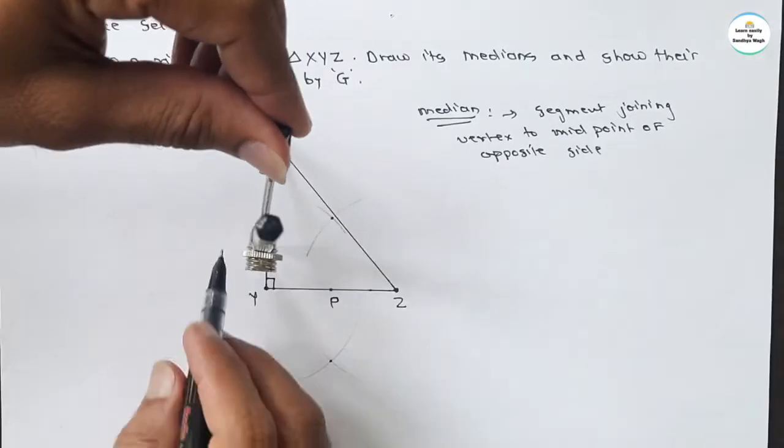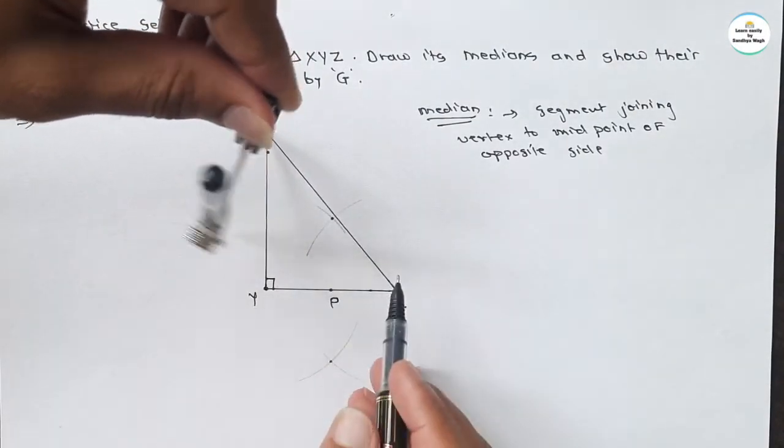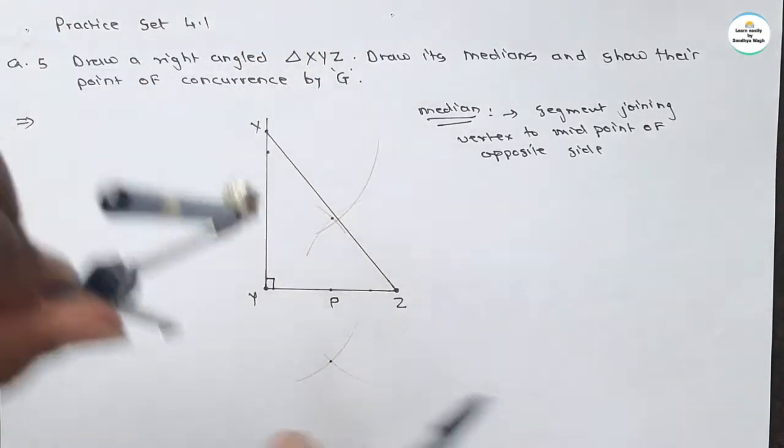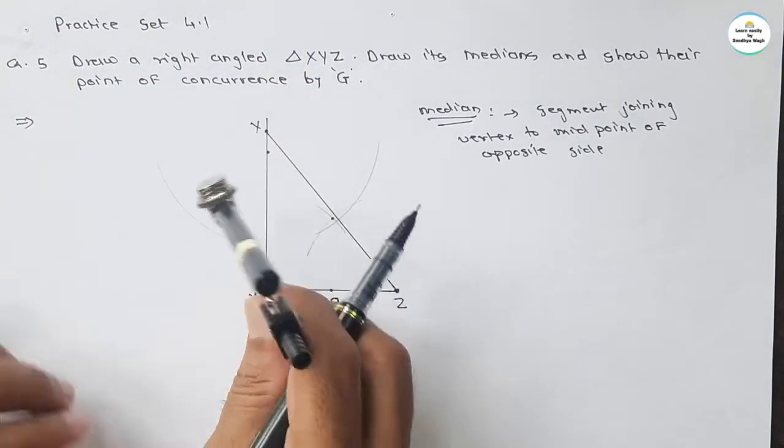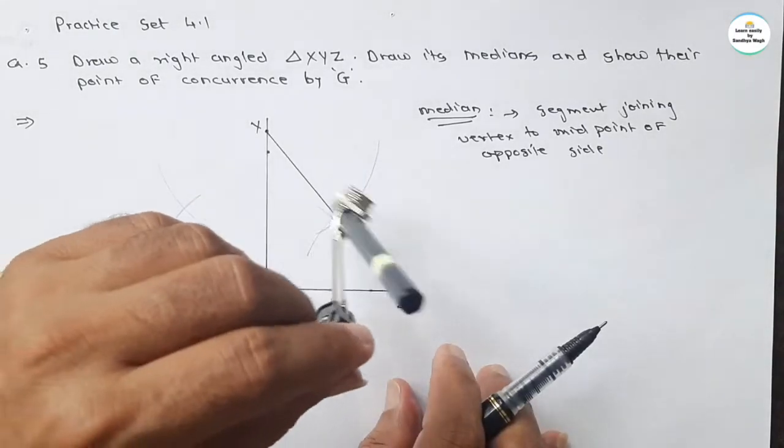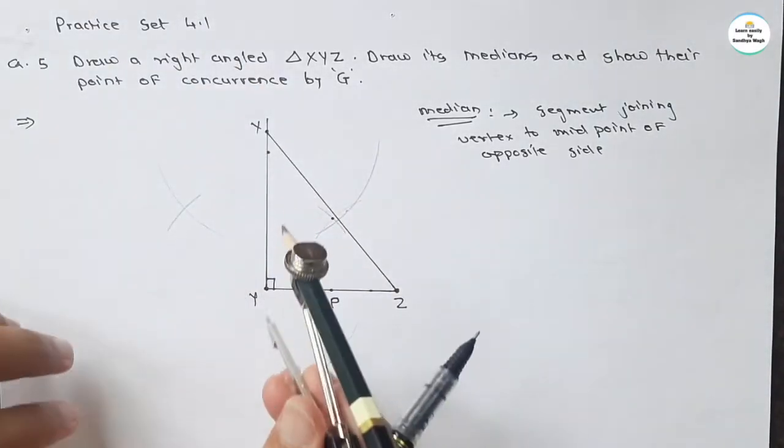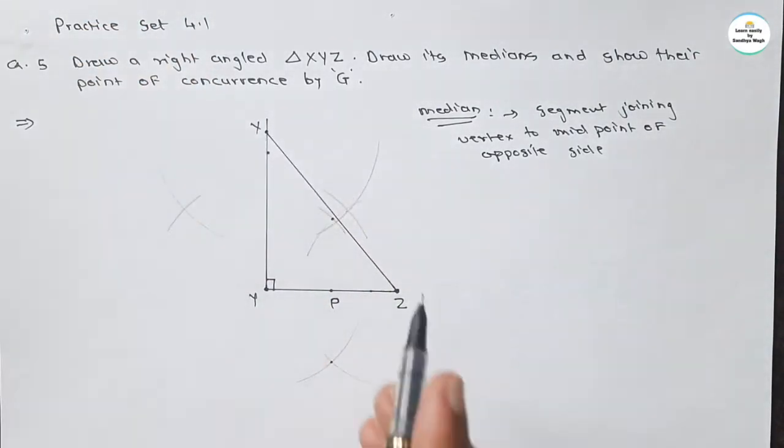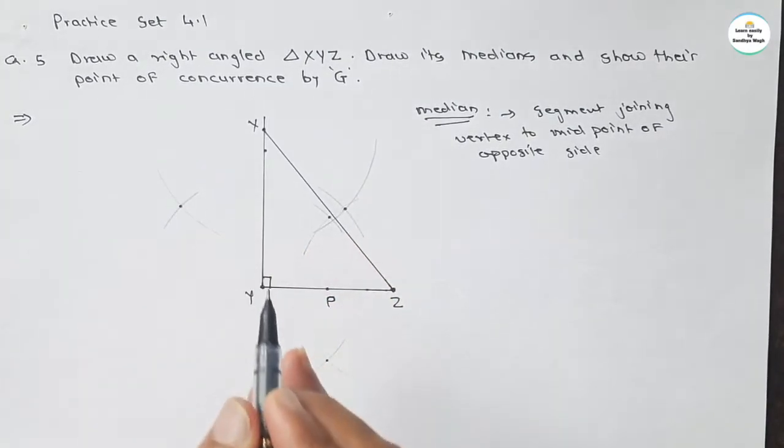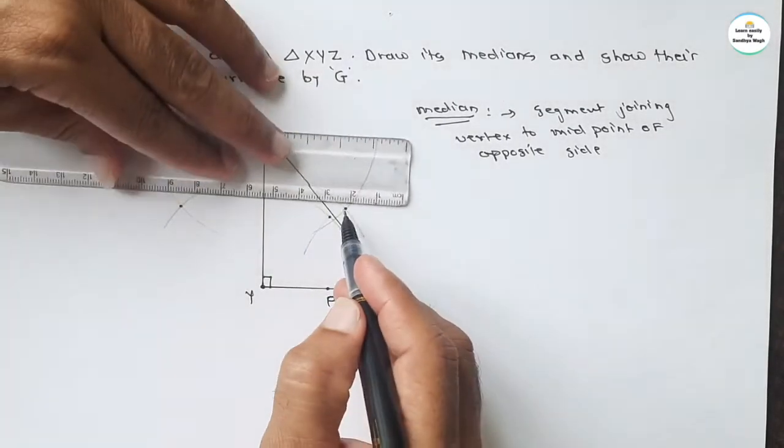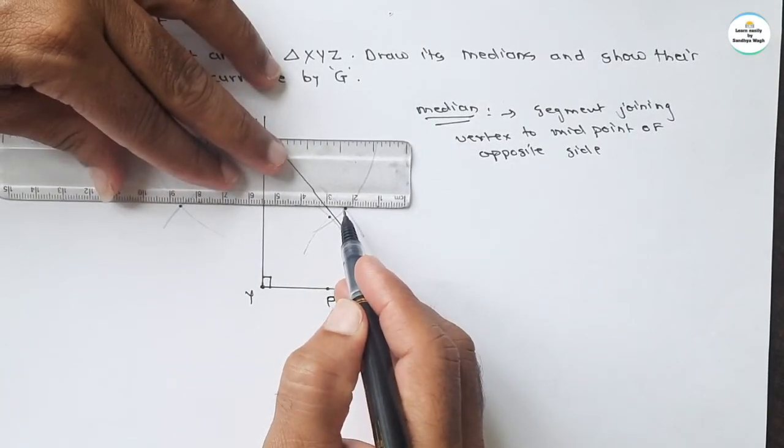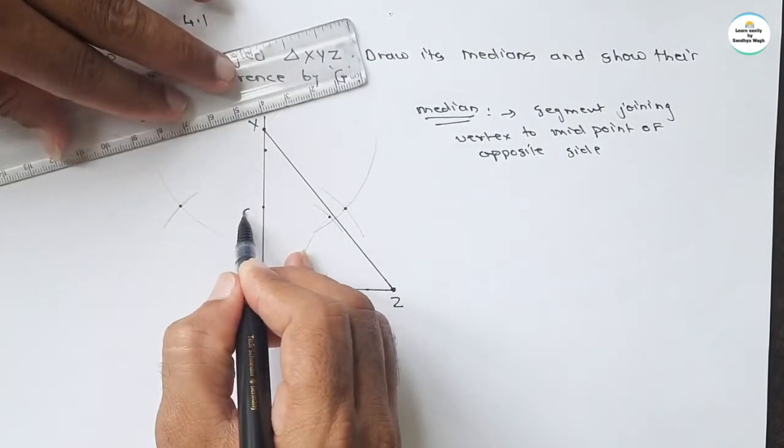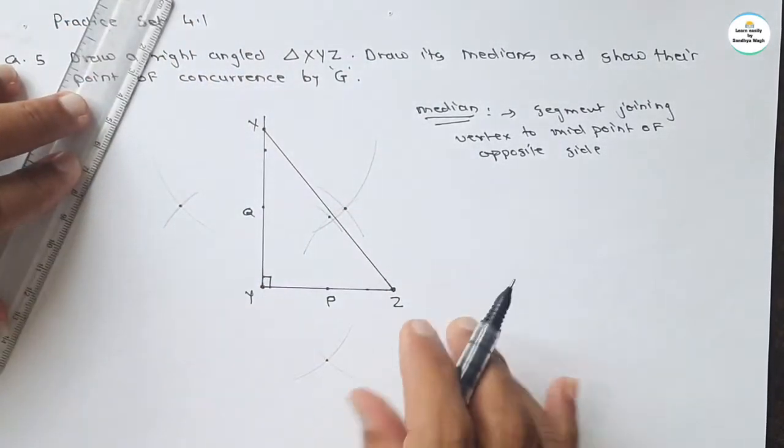Similarly, draw the arc taking more than half of segment XY on both sides, then draw arcs with Y as center to cut these two arcs. You will get again two distinct points. If we join these two points, that segment will intersect XY at point, let it be Q. It is the midpoint of XY.